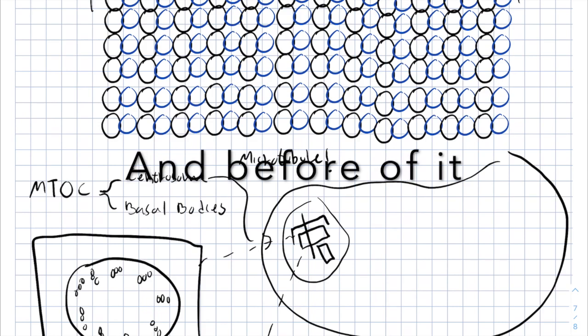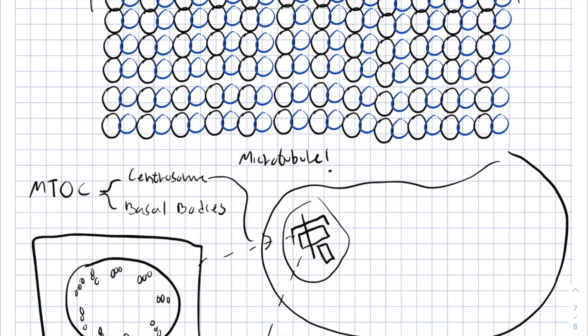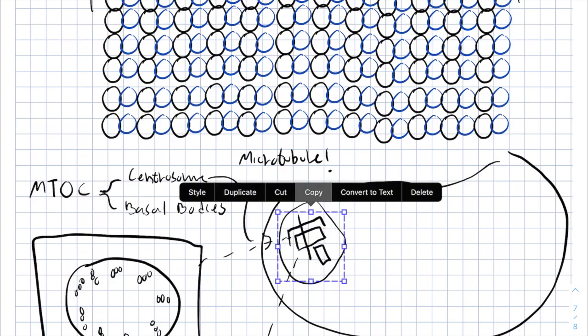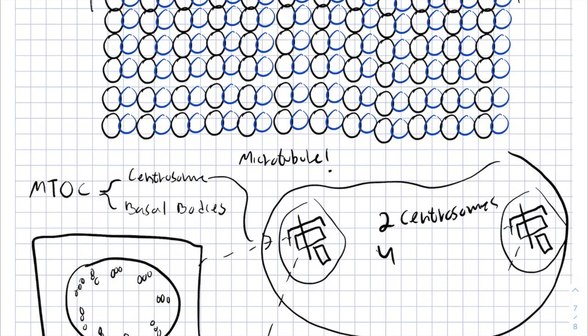If we look inside the centriole in cross-section, we will see nine triplets of microtubules. During mitosis, the centrosome duplicates itself into two, so at the beginning of mitosis we will have two centrosomes but four centrioles.